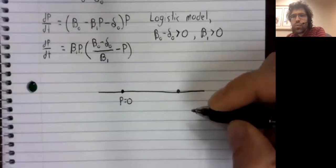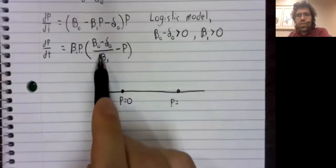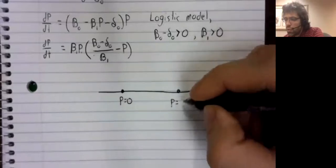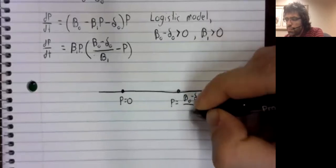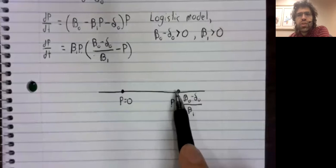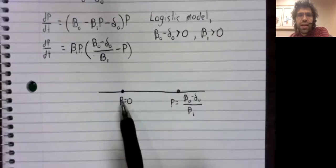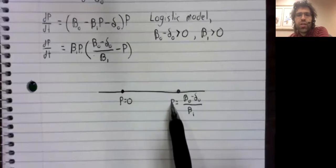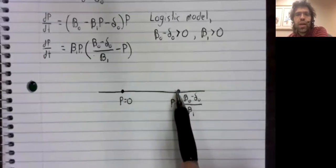There's another point where the derivative equals zero, the point where this term equals zero. P is beta zero minus delta zero over beta one. And this value doesn't have the clear real world meaning that extinction had. But if the population were ever equal to this, the derivative would be zero, the population would stop changing in size, and the population would just sit here forever.